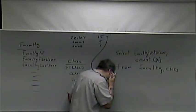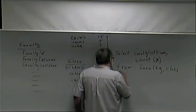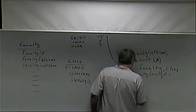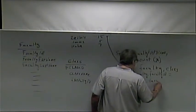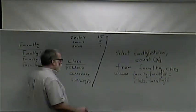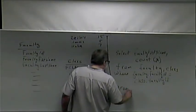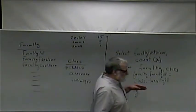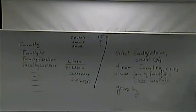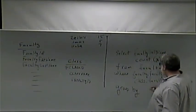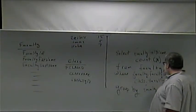The FROM clause is the same: FROM faculty, class WHERE faculty.faculty_ID = class.faculty_ID. Then we have the new GROUP BY clause at the end — that says how we're going to organize and lump things together. We're going to GROUP BY faculty_last_name. This would assume there were no two faculty with the same last name, right? Because it would lump all their classes together. If there were two Zellerses, it would give a combined total.